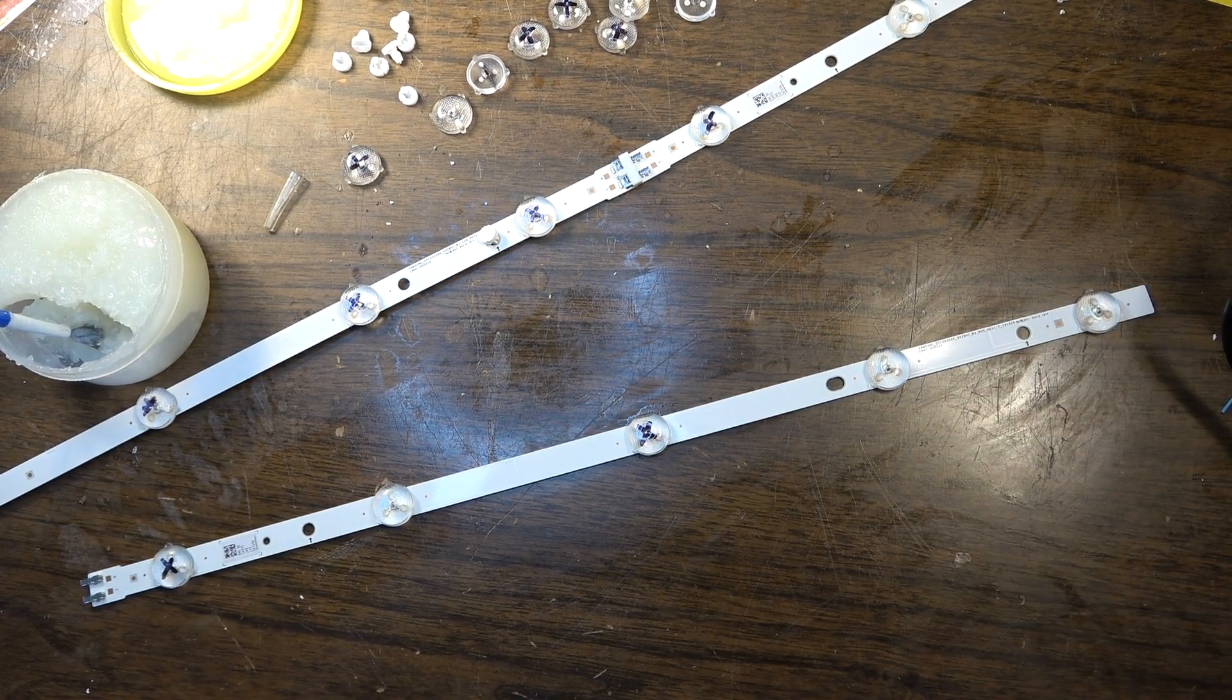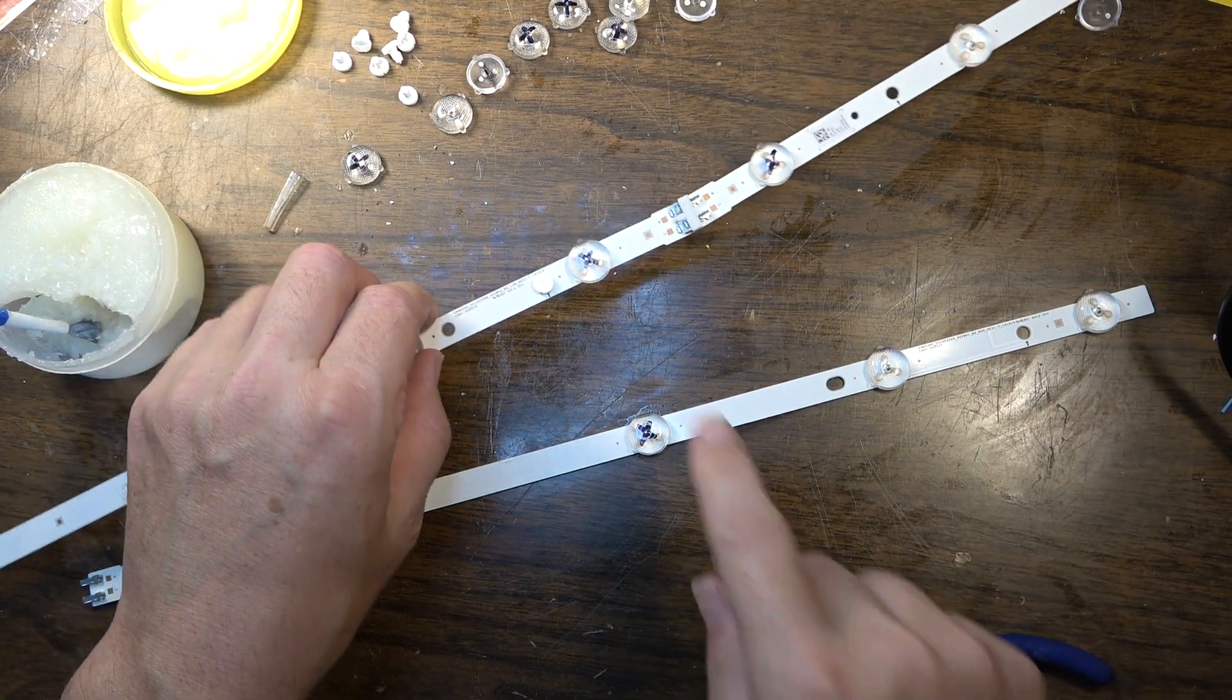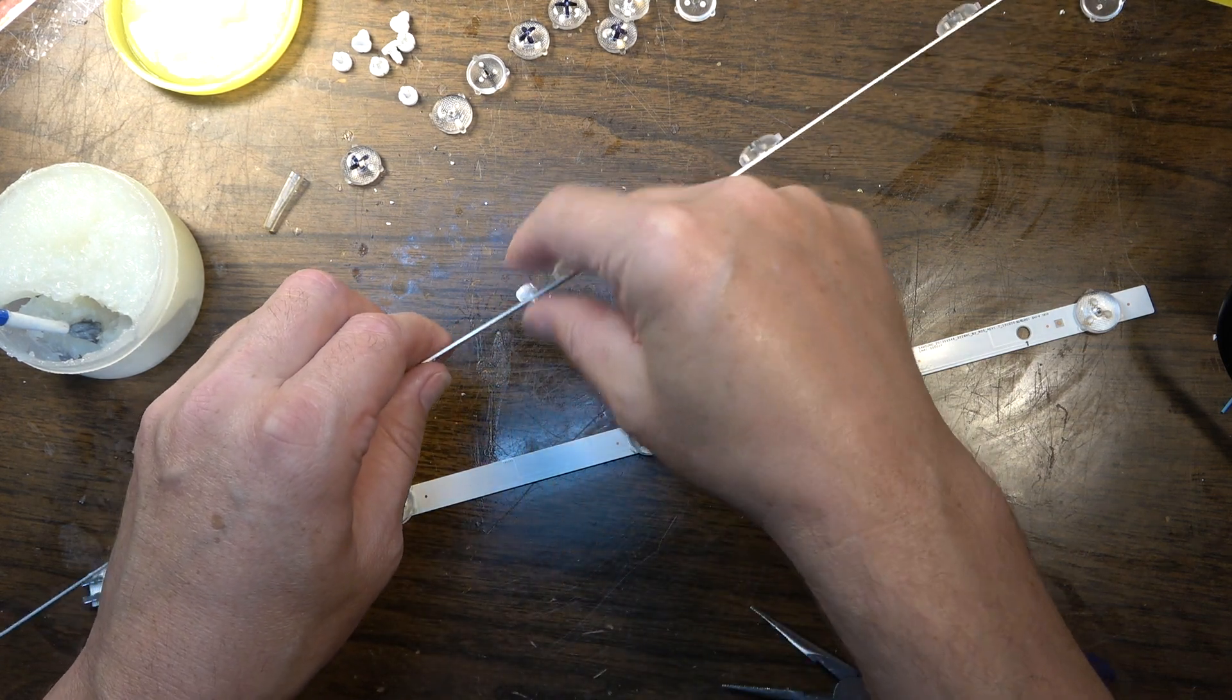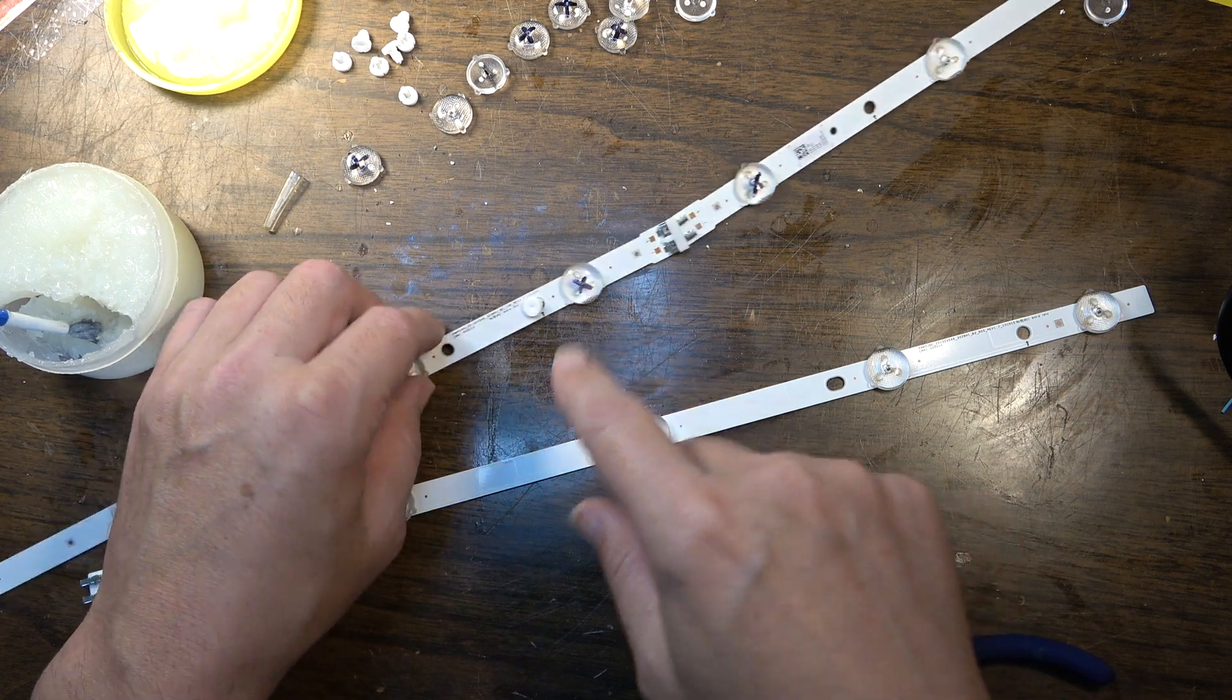First of all, you want to remove these little tabs, these little plastic tabs that mount into the TV. Those just get in the way and kick this thing up. You want it to lay flat against your work surface, so I've removed those.